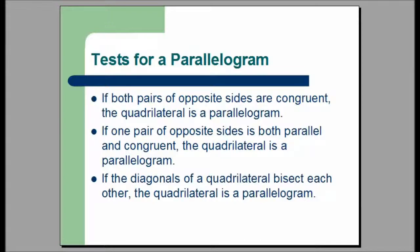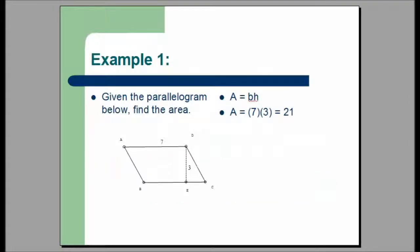Here are some tests for a parallelogram. If you are given a quadrilateral and you want to know whether it's a parallelogram, you would check for the following: if both pairs of opposite sides are congruent, then the quadrilateral is a parallelogram; if one pair of opposite sides is both parallel and congruent, the quadrilateral is a parallelogram; if the diagonals of a quadrilateral bisect each other, the quadrilateral is a parallelogram.